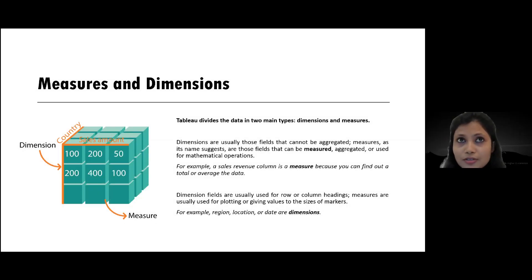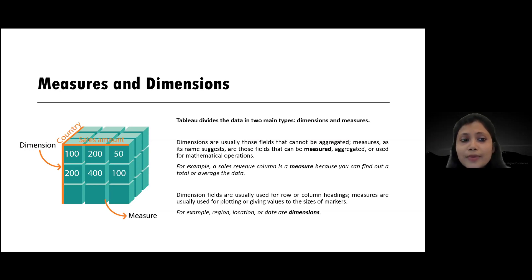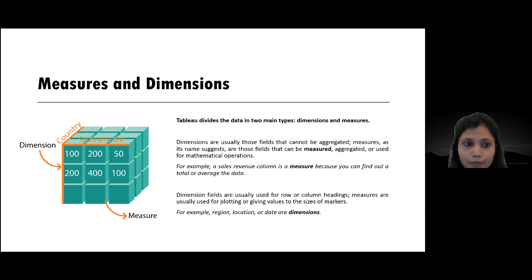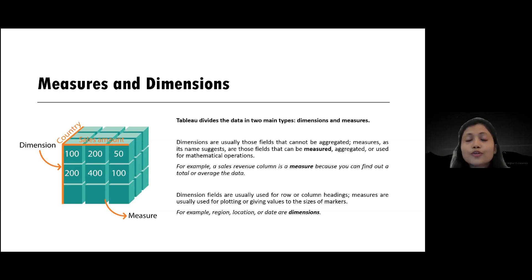There are two key terminologies in Tableau: measures and dimensions. Measures are basically measurable numbers like sales and income. Dimensions are categorical variables, for example country and age group. When you load your data into Tableau, it differentiates the data into measures — the numerical variables — and dimensions — the categorical variables.